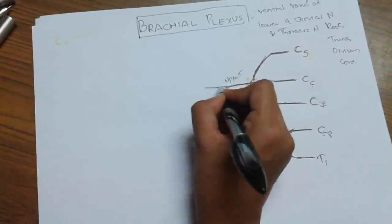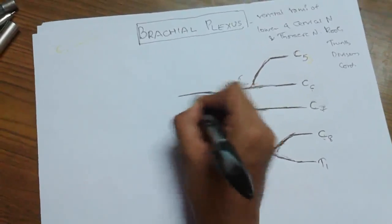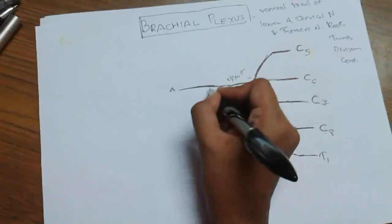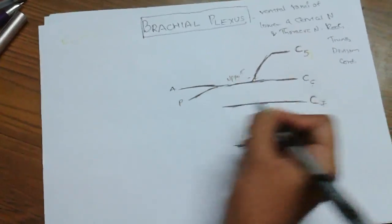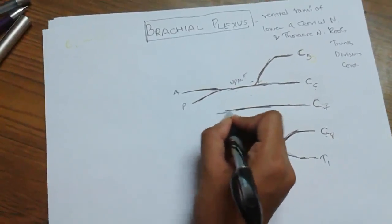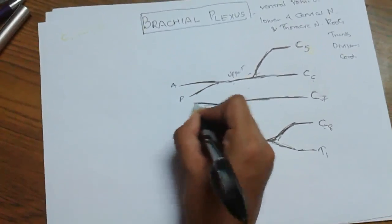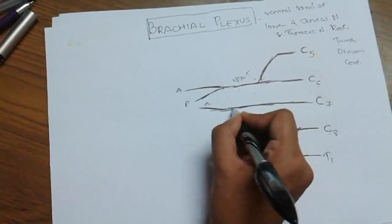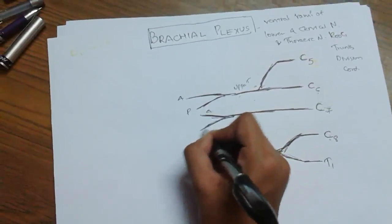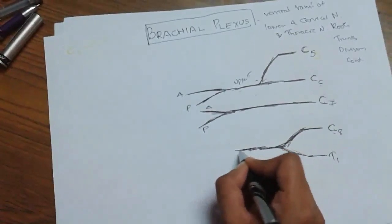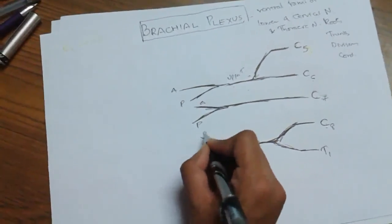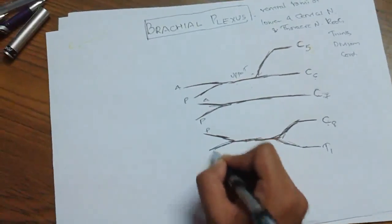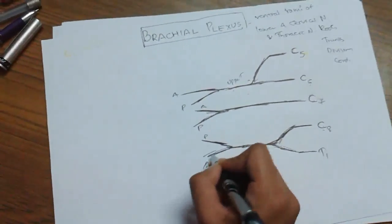Now, trunks are divided into divisions. The anterior division and posterior division for each trunk. This is the anterior division of the middle trunk and the posterior division of the middle trunk. For the lower trunk, the posterior and anterior divisions are drawn in reverse order just for convenience to avoid a zigzag pattern.